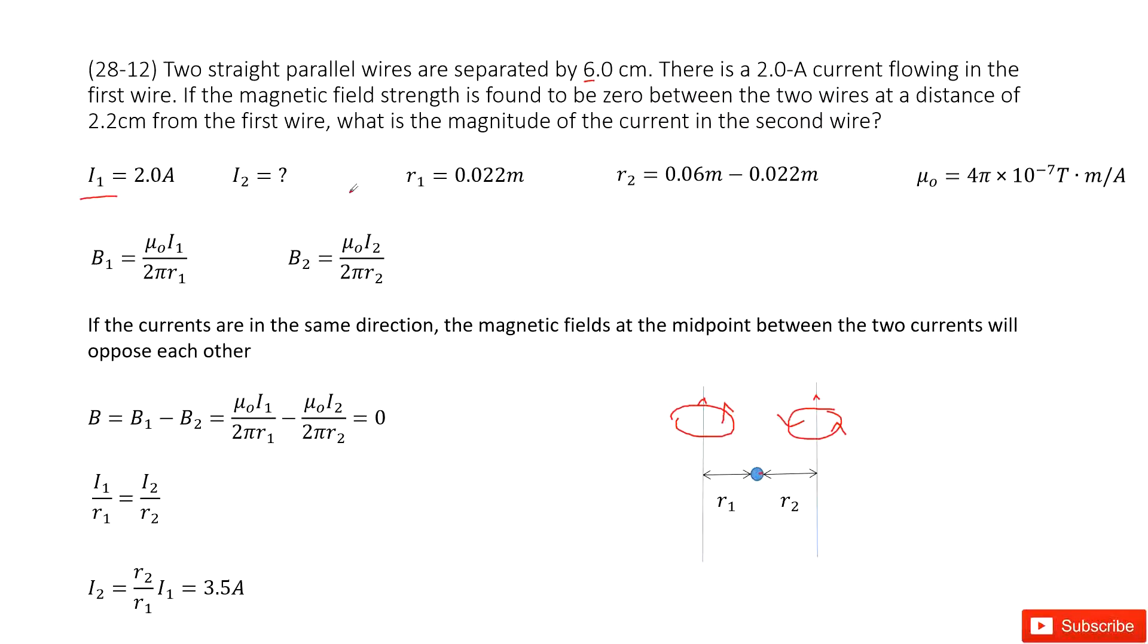So we list all the given quantities. Now we can write down the magnetic field for B1 and B2. This is the magnetic field due to each wire. As we talked about, we need to find a point where the net magnetic field is 0. So that means B1 minus B2 equals 0.